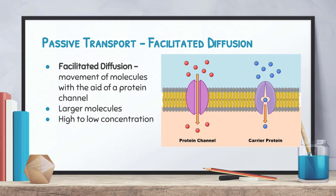Another type of passive transport is facilitated diffusion, where the movement of molecules occurs with the aid of a protein channel. This applies to molecules that are larger — they can't simply diffuse through the cell membrane — and also to polar molecules, since they can't diffuse through the membrane due to the polarity of the lipids in the bilayer. These molecules still go from high to low concentration, which is why it's still passive transport requiring no energy. They move through a protein channel.